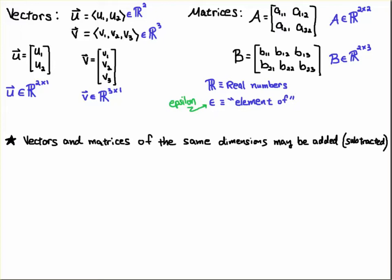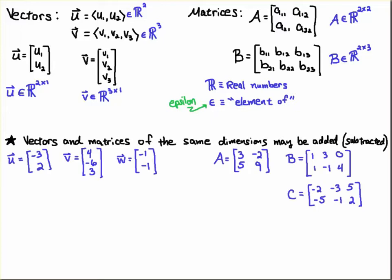Here's some examples. So here I have three vectors u, v, and w. Notice that u is in R^2, v is in R^3, and w is in R^2.